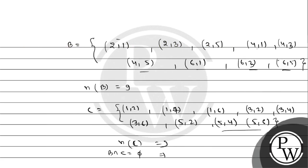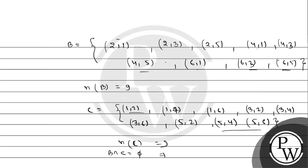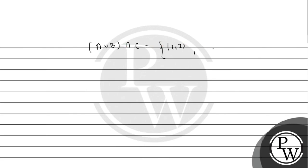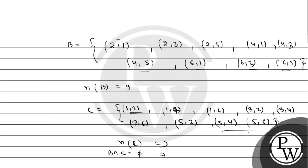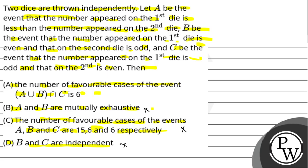Now let's find A∪(B∩C). Since B∩C is empty, we need A∩C. The common elements between A and C are: (1,2), (1,4), (1,6), (3,4), (3,6), (5,6). That gives 6 elements. So the number of favorable cases of event A∪(B∩C) is 6, confirming Option A is correct.